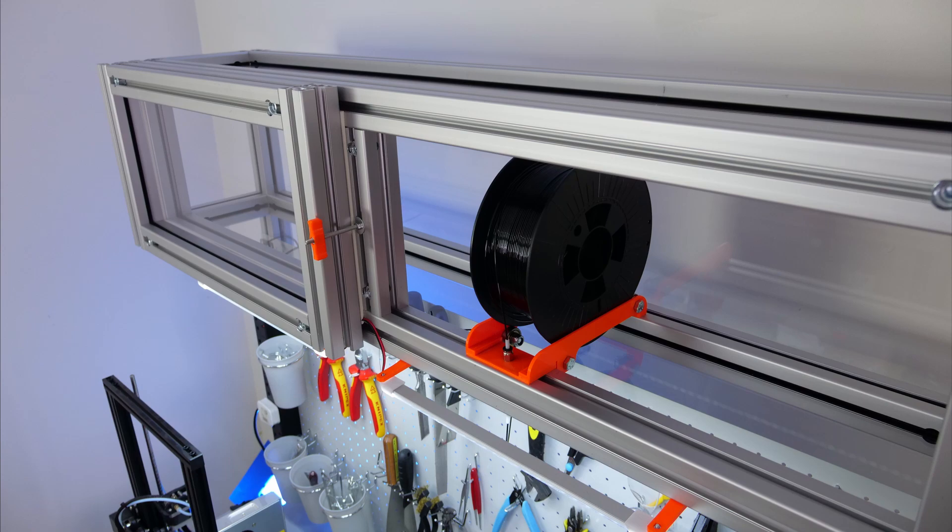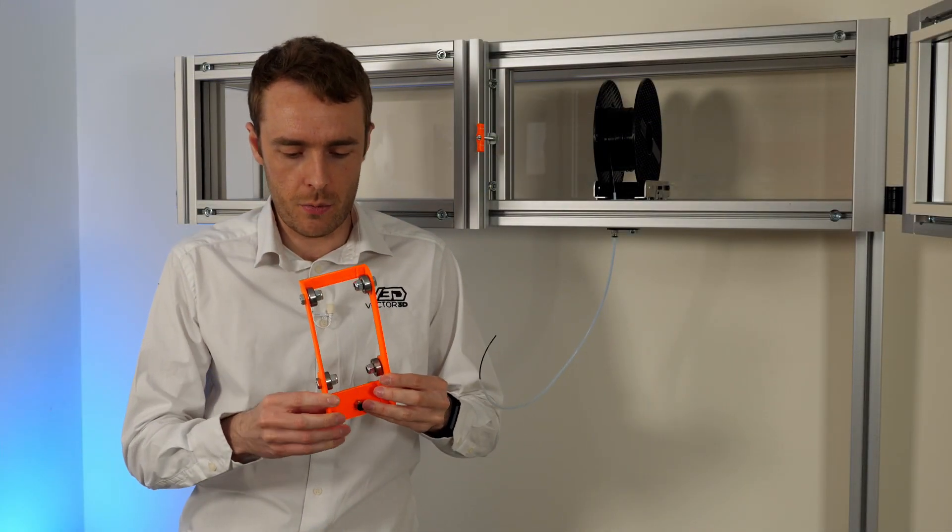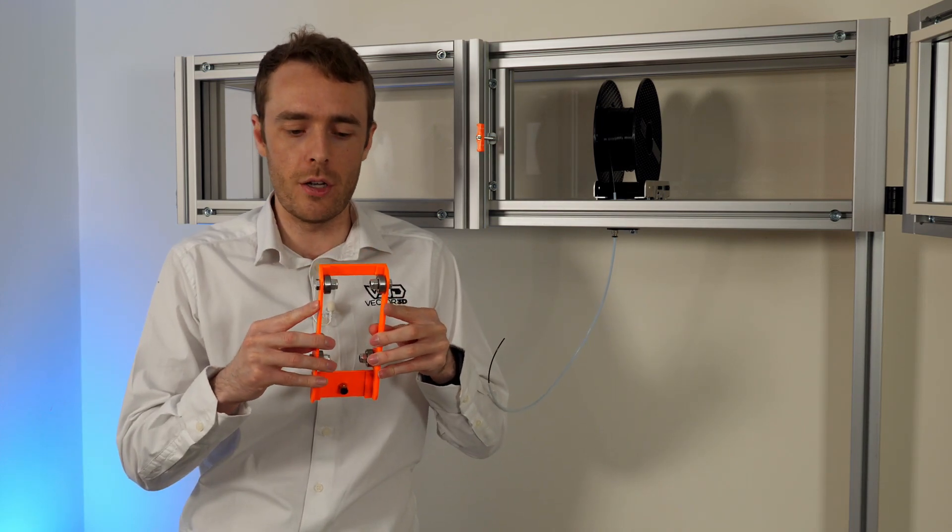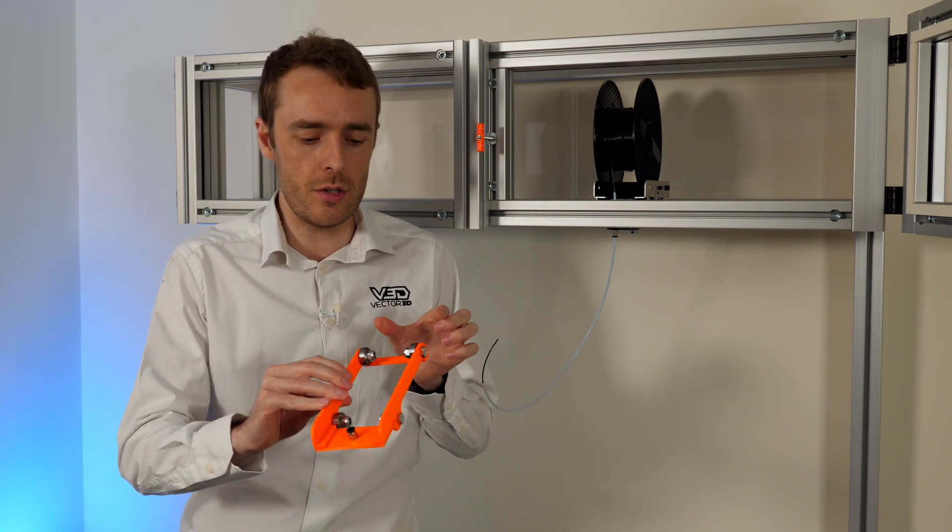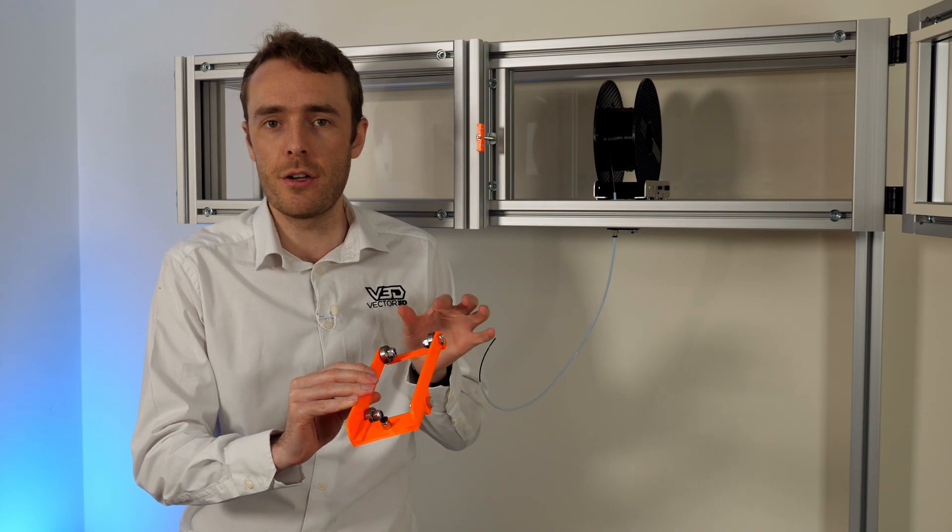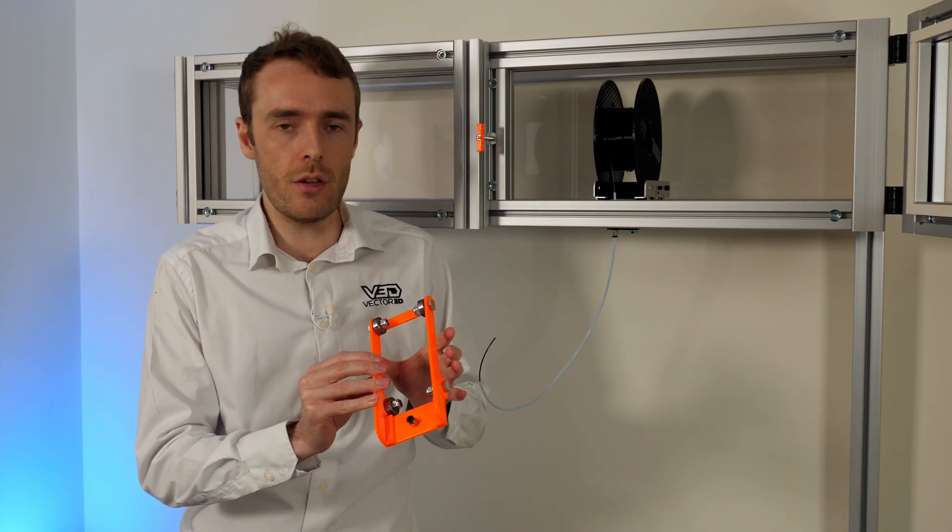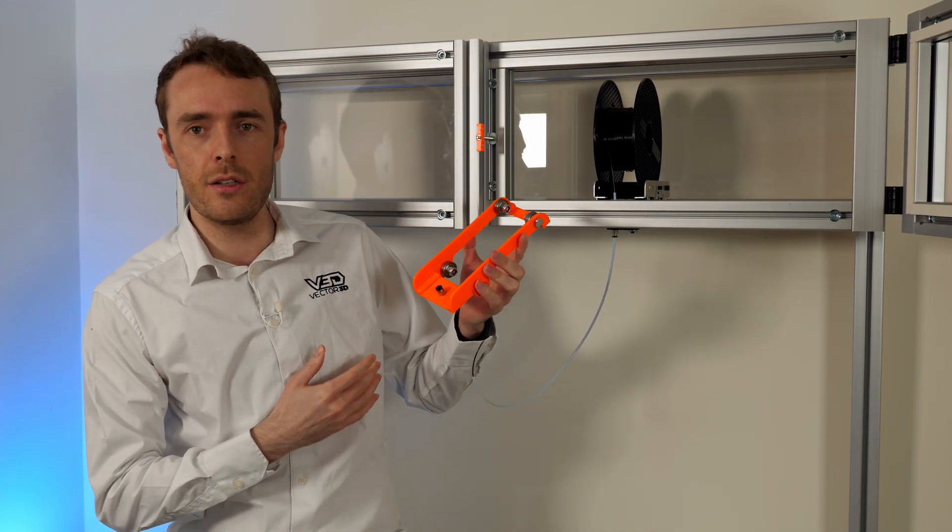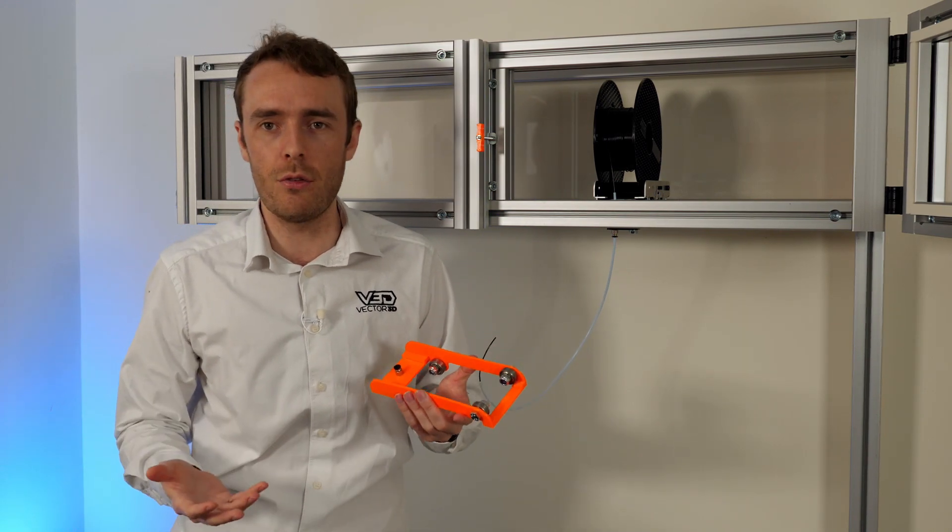The other downside of this design is that it was a fixed width so because we've got these kind of cross beams we can't change the width of this roller. So if all the filament that you use is kind of the really narrow maybe 750 gram spools then a lot of your enclosure if you fill it with these it's going to be empty space and that's not really optimal.